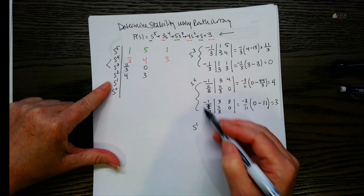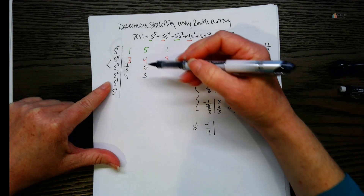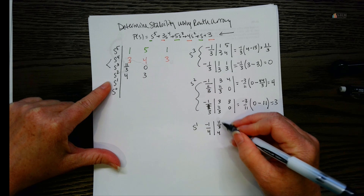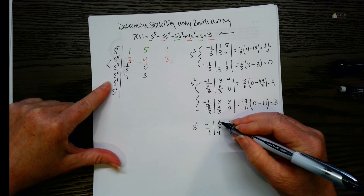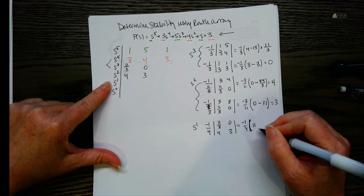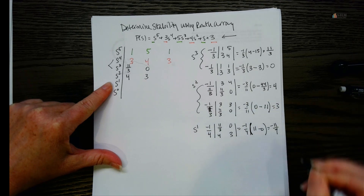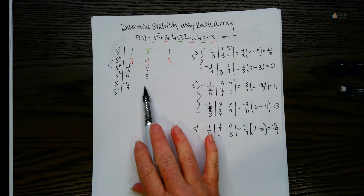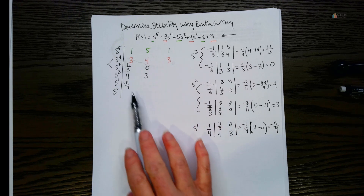For the s-first row, the coefficient is negative one over four — the first element of the row above. The determinant uses eleven over three, four, zero, and three. That gives negative one-fourth times eleven over three times three minus zero, which is negative one-fourth times eleven, giving negative eleven over four. There's no more data available, so that's all we have in that row.